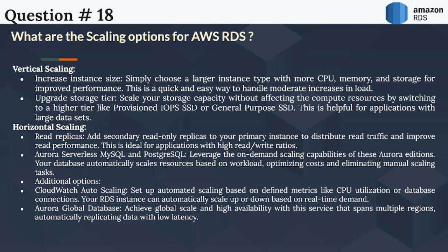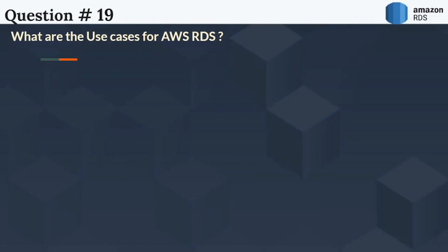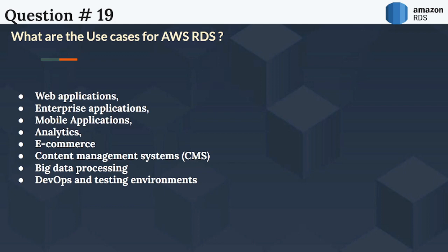The next question is: What are the use cases for AWS RDS? AWS RDS has a wide range of use cases due to its versatility and powerful features, including web applications, enterprise applications, mobile applications, analytics, e-commerce, content management systems, big data processing, and DevOps and testing environments.